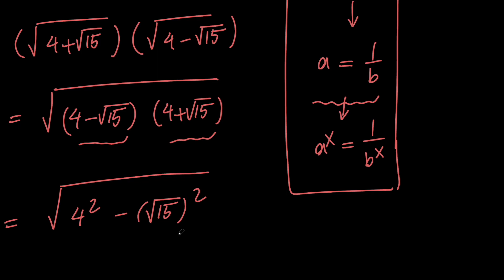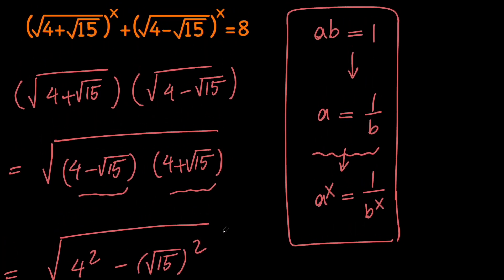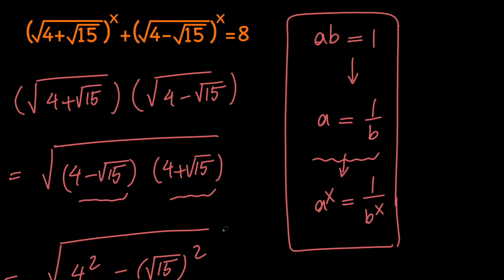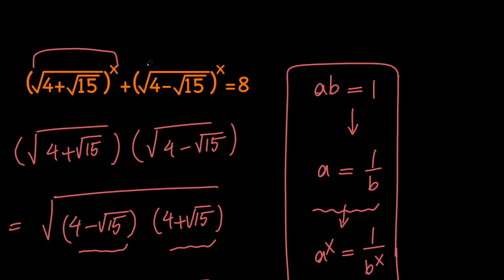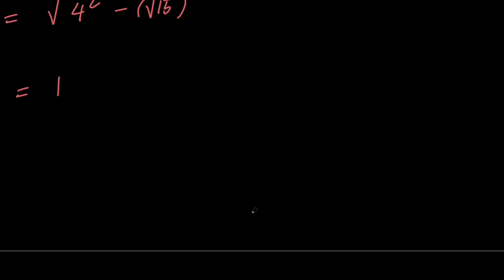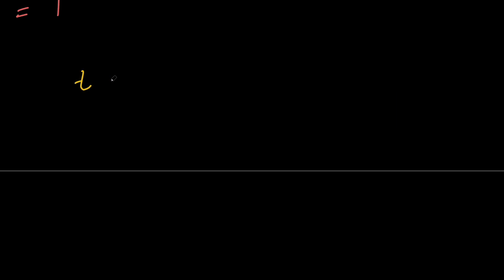So the product of these two numbers equals 1, which means they are reciprocals. And as I said, if two numbers are reciprocals, those numbers to the x power are reciprocals as well. So these two expressions are reciprocals. If I replace (square root of 4 plus root 15) to the x with t, then (square root of 4 minus root 15) to the x is 1 over t, and their sum equals 8.